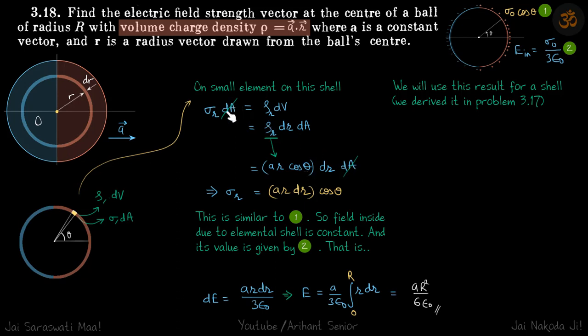So dA will get cancelled from both sides and I will get sigma r is equal to a r dr cos theta.